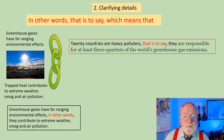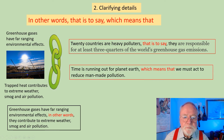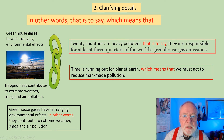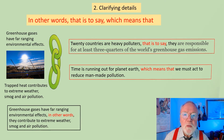Two more examples. '20 countries are heavy polluters. That is to say, they are responsible for at least three quarters of the world's greenhouse gas emissions.' And: 'Time is running out for planet Earth, which means that we must act to reduce man-made pollution.' You see how the conjunctions nicely join the sentences together and give them a good academic feel. You will always get more marks if you can write sentences like this, and it really isn't too difficult if you pick exactly the conjunctions you want to use. You don't have to know them all.